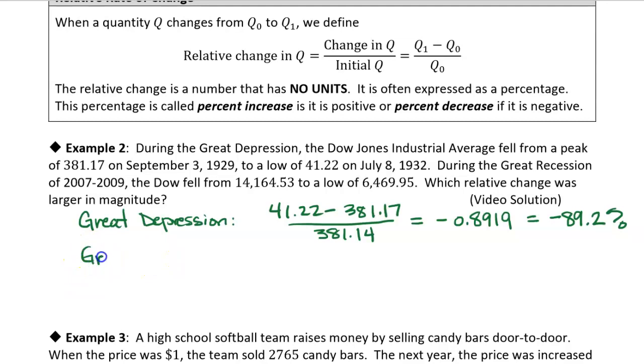So now let's look at the Great Recession. Great Recession, from 2007 to 2009. The final amount was 6,469.95, and we're going to subtract the initial amount, which was 14,164.53. And we're going to divide that by the initial quantity, which was 14,164.53.